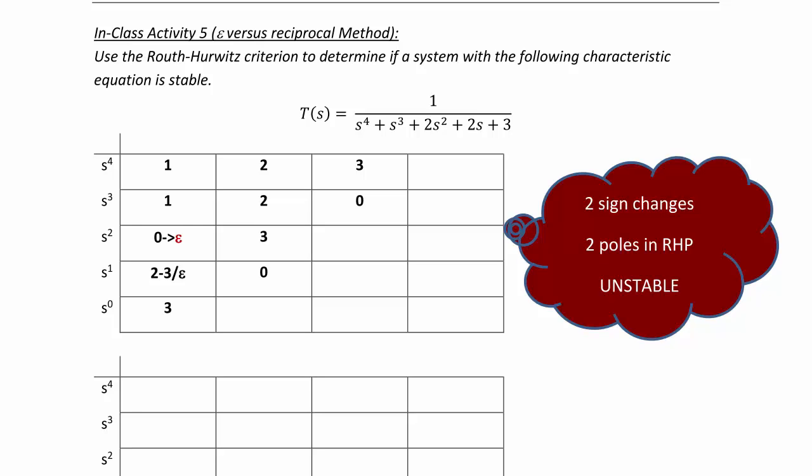We've already seen one example where we had the epsilon method. So assume we have a closed loop transfer function, one over s to the fourth plus s cubed plus two s squared plus two s plus three.